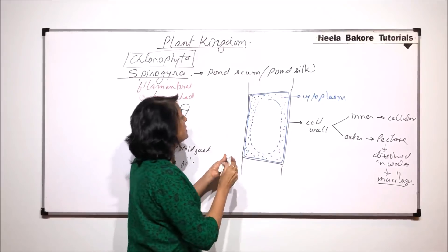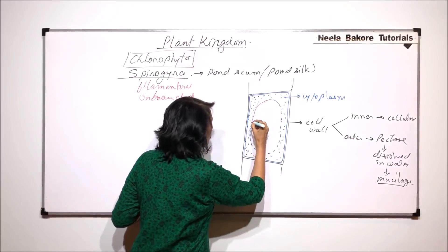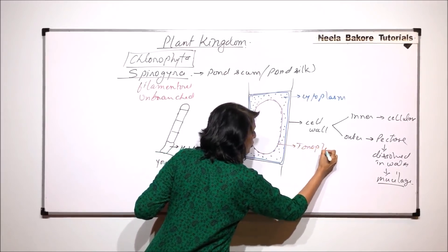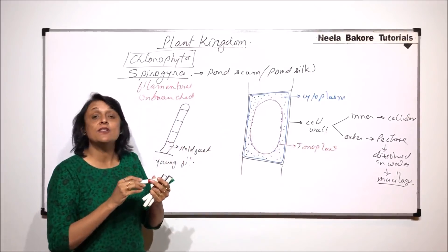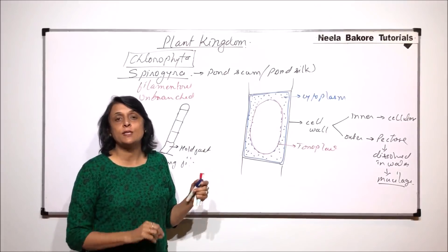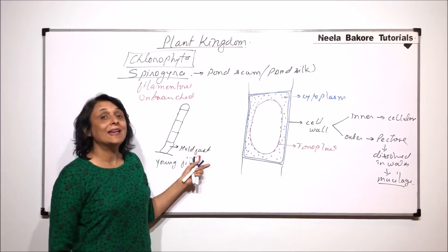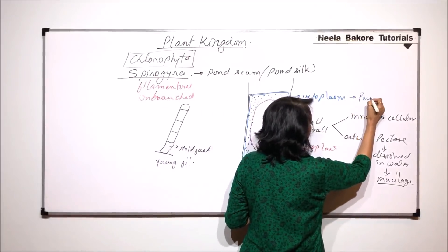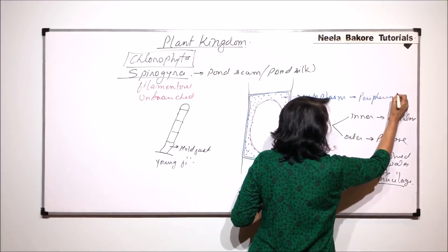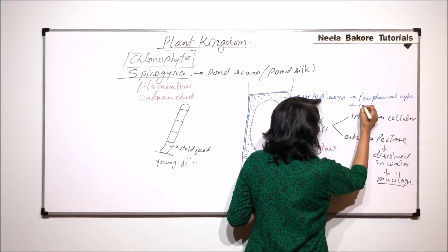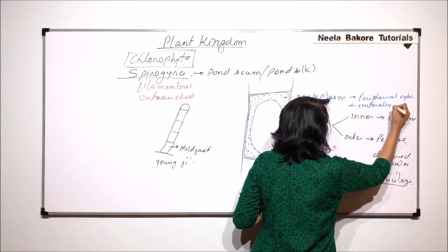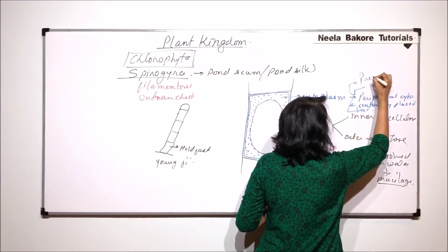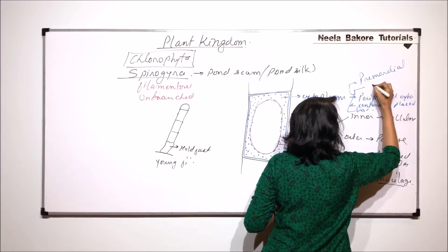If we draw this vacuole, we will have to show the membrane and this membrane is known as tonoplast. There is a large centrally placed vacuole because of which the entire cytoplasmic content becomes peripheral. What exactly we are talking about? Peripheral cytoplasm and centrally placed vacuole. This structure is known as primordial utricle.